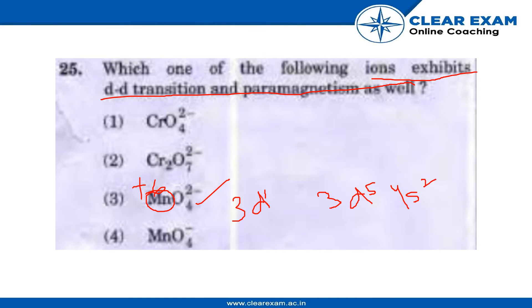Hence, the Mn atom in MnO4- has a +7 oxidation state with outer electron configuration of 3d0. That means it will not have any d-d transition.